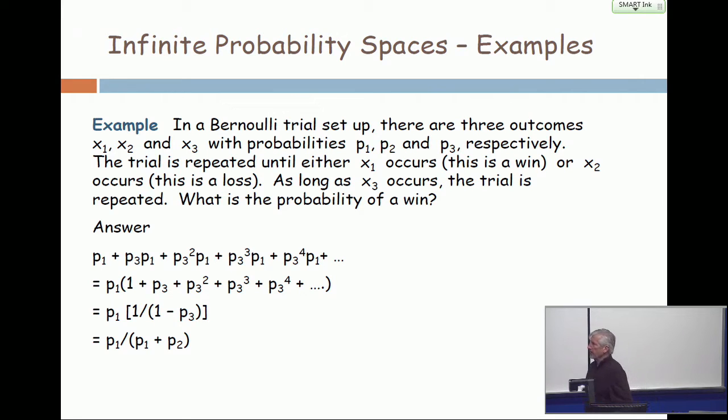So the probability of a win is you can win on the first turn. If you win on the first turn, that's P₁. But you can win on the second turn. The only way you win on the second term is if the first one is a neither. So you get a P₃ and then a P₁. Or you can win on the third turn. And the only way that can happen is that you get a neither on the first two. That's a P₃ squared times P₁, etc. So this becomes an infinite series. You factor out the P₁, and you get P₁ times 1 plus P₃ plus P₃ squared plus P₃ cubed, etc., etc., etc.